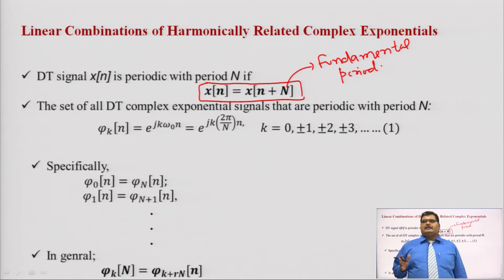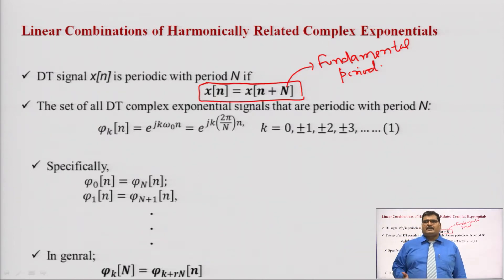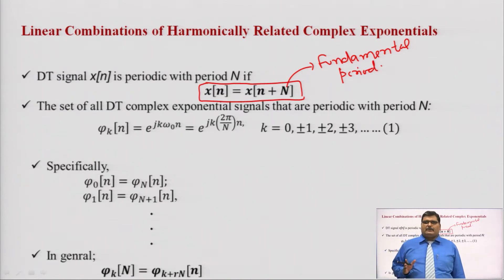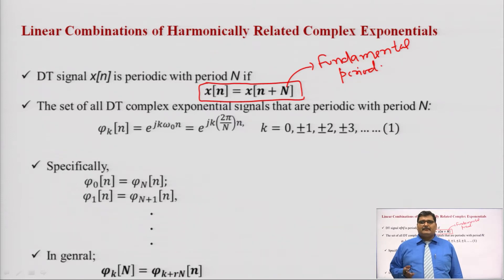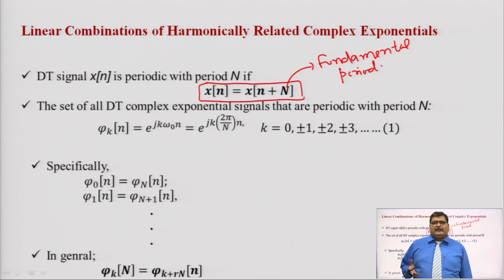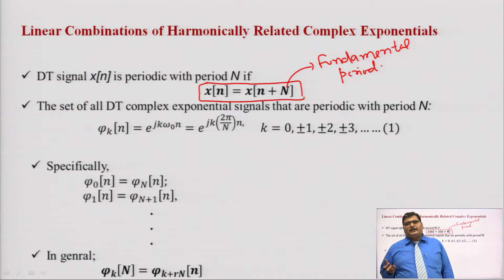When we have discrete time periodic signals, we have a set of all discrete time complex exponential signals which are periodic with fundamental period capital N. This is given by φk(n) = e^(j k ω₀ n), where ω₀ = 2π/N, and k takes values 0, 1, 2, 3, 4 and −1, −2, −3, −4.